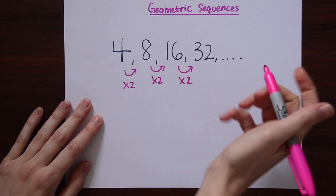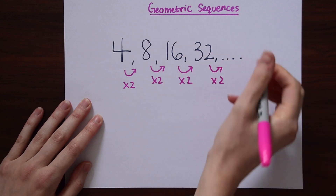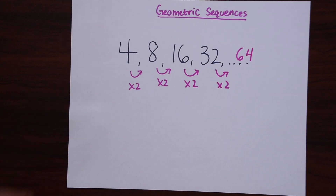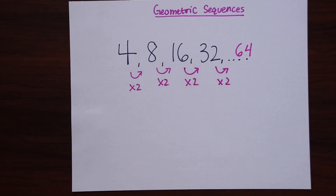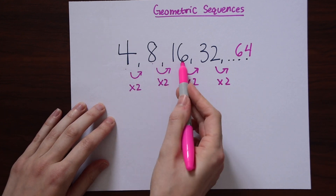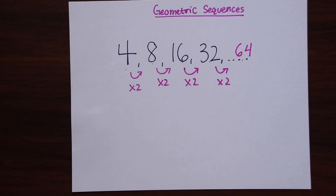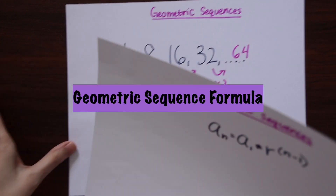So if we wanted to find the next term in the sequence, we would just multiply 2 times 32, which would give us 64. We can easily see what the next term is here, but what if we wanted to find the 15th term? This is the first term, second term, third term, fourth term, fifth term — but we want the 15th term. That's where the geometric sequence formula would come in.